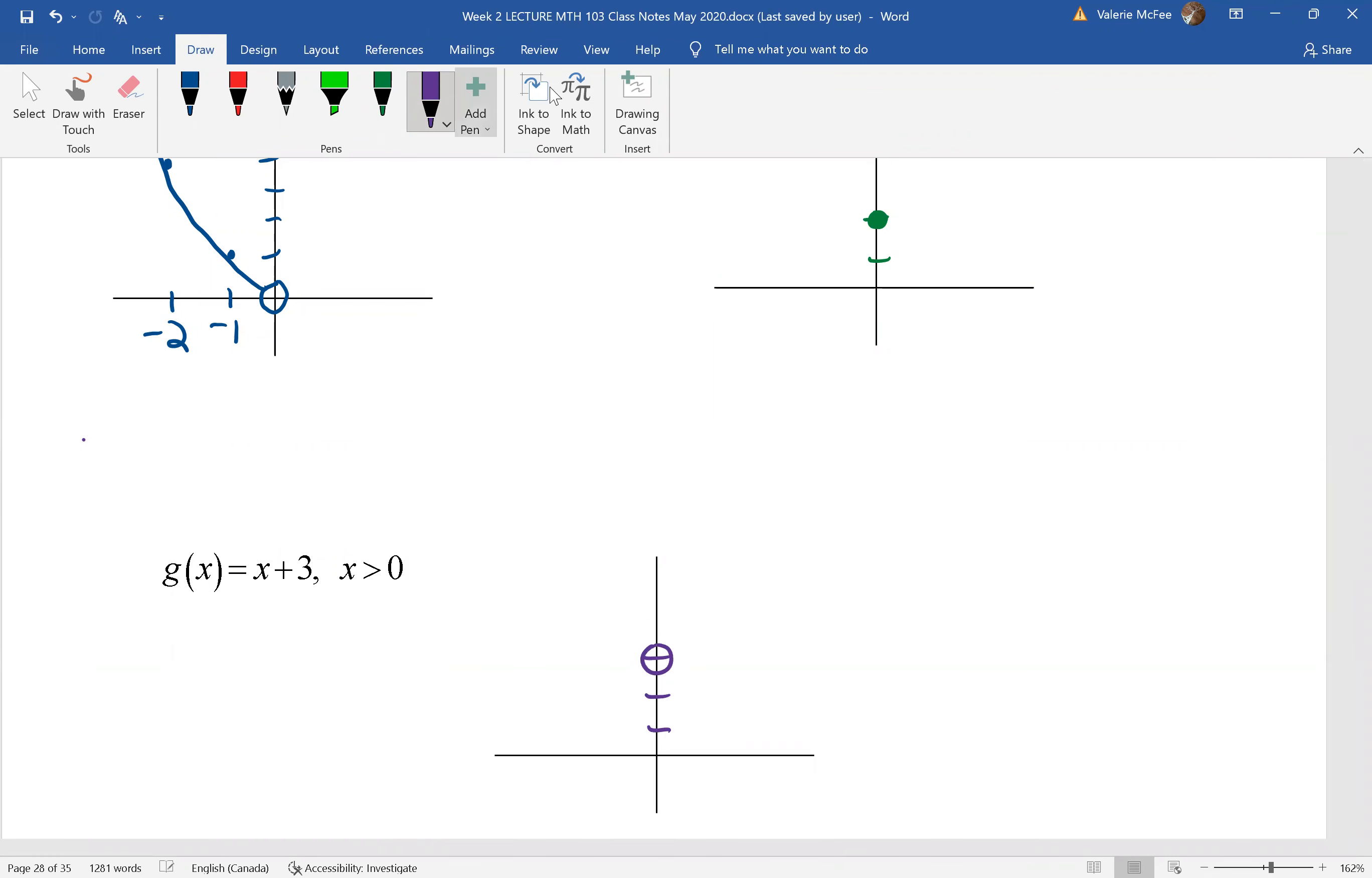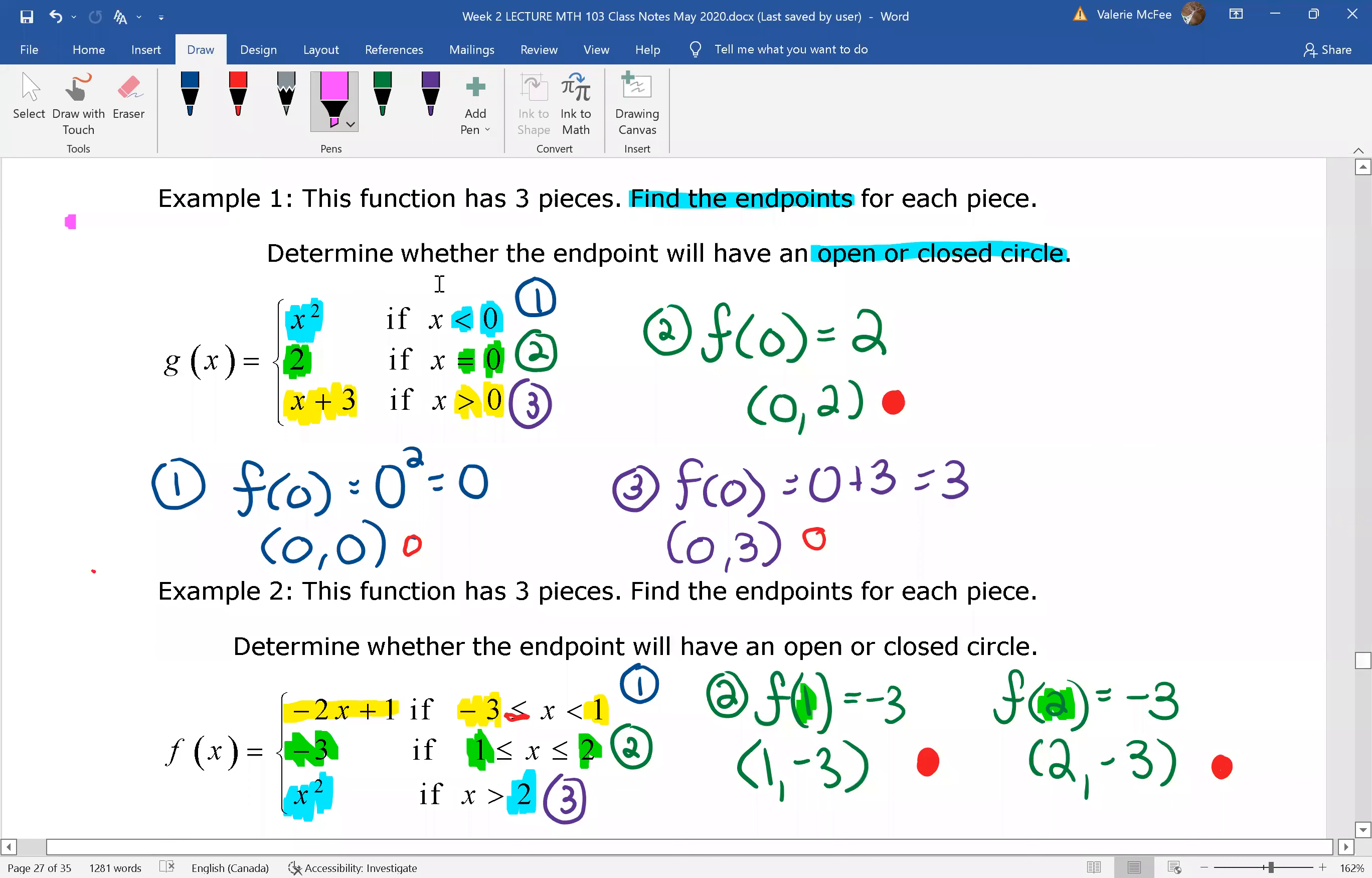Now let me just pause a minute and remind you where we're getting these endpoints from. Remember we had (0,0) with an open circle. We had (0,2) with a closed circle. And now we're looking at the third piece. We have an endpoint at (0,3) with an open circle.